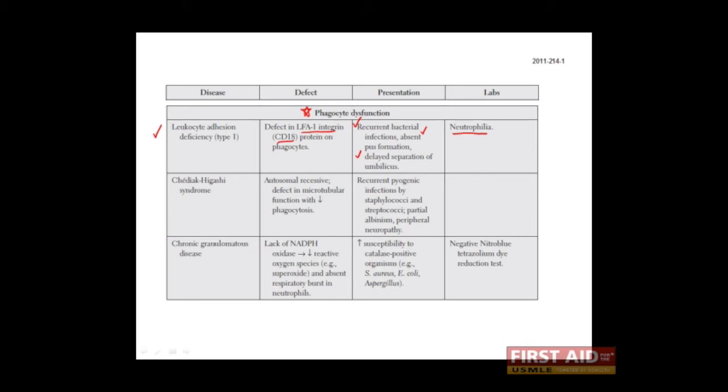Chediak-Higashi syndrome is an autosomal recessive disease which results in defective microtubule function and lysosomal emptying, which is associated with impairments in phagocytosis.